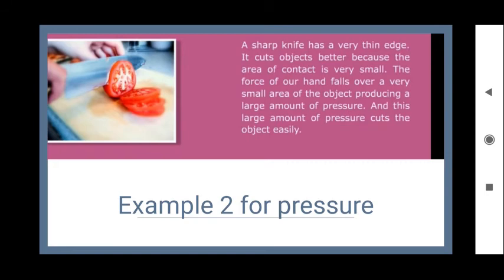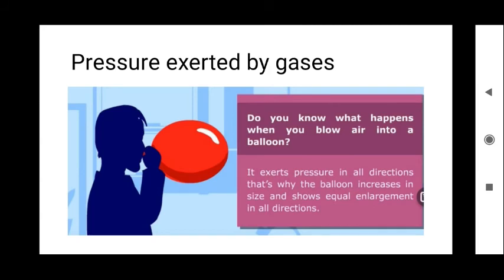Can pressure be exerted by gases, liquids, and solids? We already know from the table experiment that pressure is exerted by solids. In the case of gases, when you blow air into a balloon, it gets blown up because the air is exerting pressure in all directions — that is why the balloon increases in size with equal enlargement in all directions. This clearly shows that gases can also exert pressure.